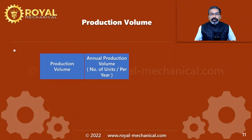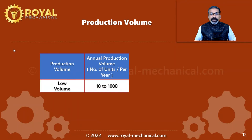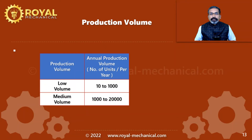Now let me explain a few things related to the production volume. Production volume, also referred to as annual production volume, is the number of units manufactured in a year. If the number of units manufactured in a year is between 10 to 1000, it is called low production volume. If it is between 1000 to 20,000 components, it is referred to as high production volume.